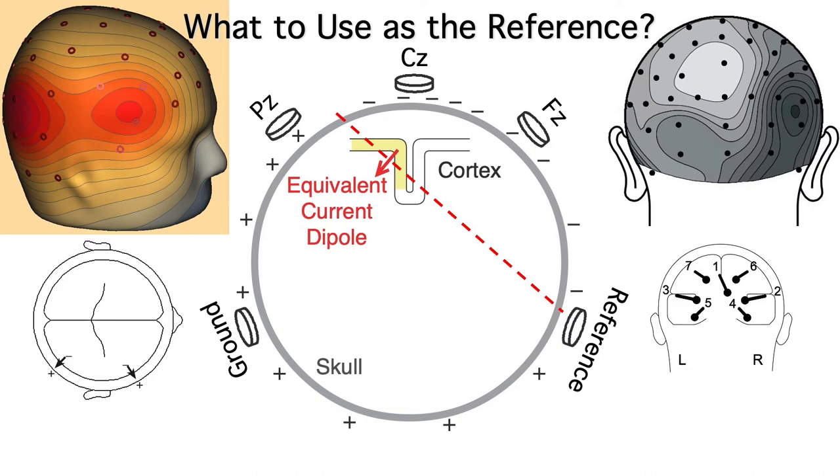The bottom line is that, no matter where you put the reference, you're picking up a real signal with the reference electrode and inverting it via the subtraction used by the referencing process.